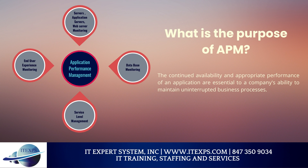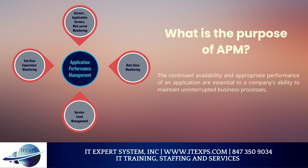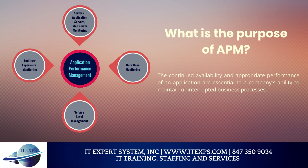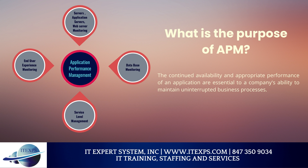What is the purpose of APM? The continued availability and appropriate performance of an application are essential to a company's ability to maintain uninterrupted business processes. This prevents unnecessary business disruptions and enhances customer satisfaction. An effective APM platform provides an organization with the ability to connect their app performance to their business outcomes, isolate and fix errors before they affect the end user, and reduce the mean repair time.